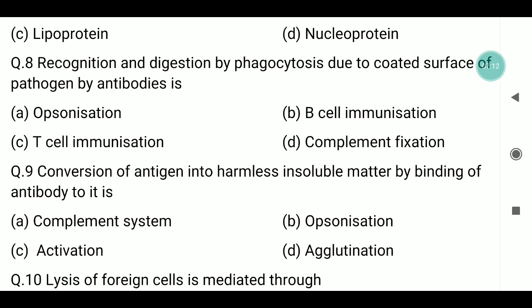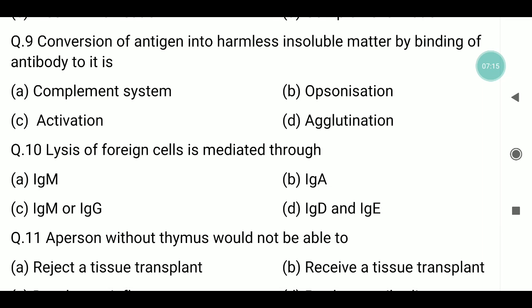Question number ten: lysis of foreign cells is mediated through what? The answer involves immunoglobulin. Immunoglobulin E is very important; it is released and produces allergic symptoms in our body. Immunoglobulin A is also very nutritious and important.